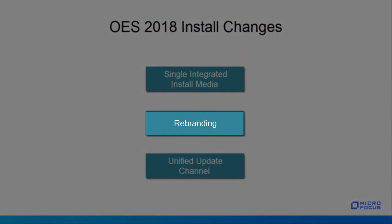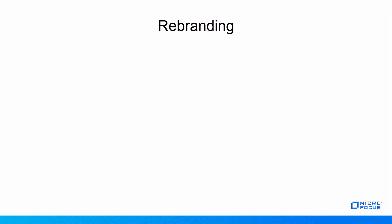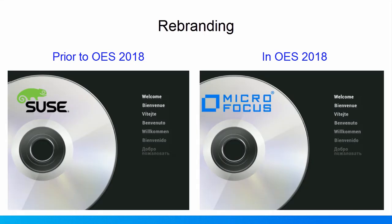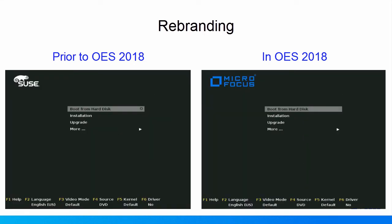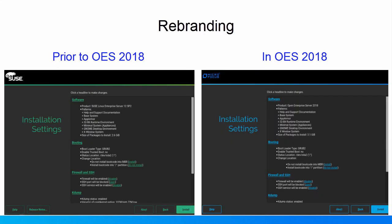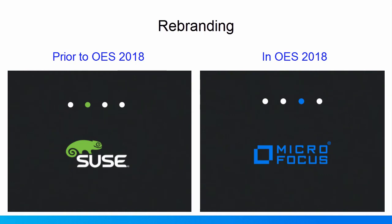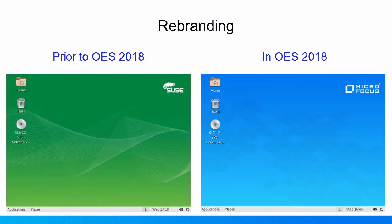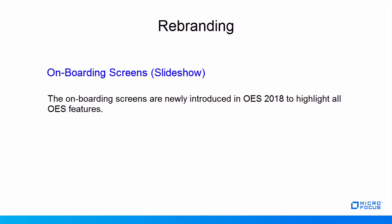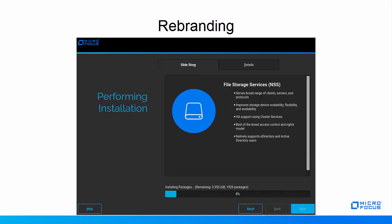Rebranding. OES 2018 comes with a Micro Focus brand. As part of rebranding changes, OES installation screens are modified to provide a new look, and a few changes in the install workflow enhance the install experience. A few sample screenshots of OES installation screens compare with earlier OES versions. Onboarding screens are newly introduced in OES 2018 to highlight all the OES features. While installing OES, click the slideshow tab to view the features available in OES 2018.